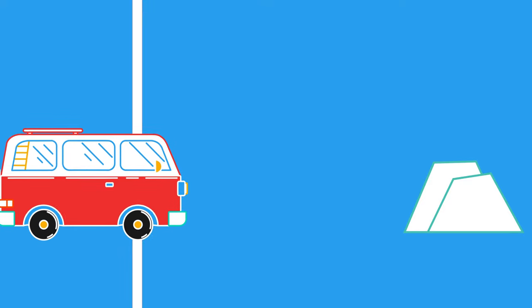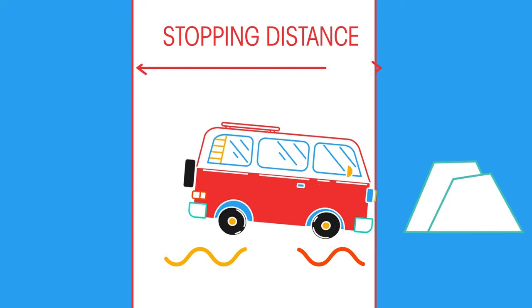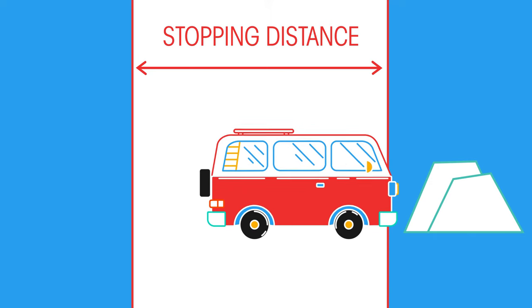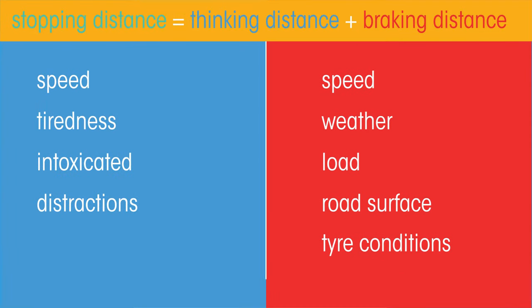So in this video, you should have learnt that the stopping distance is the distance a vehicle travels between the driver spotting an obstruction on the road, and the car's speed dropping to 0 meters per second. The stopping distance is made up of the thinking distance and the braking distance, and the factors that affect them.